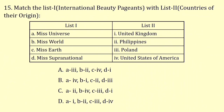Match list 1 with list 2. Miss Universe originated from the United States of America. Miss World is from the United Kingdom. Miss Earth originated in the Philippines. Miss Supranational originated in Poland. So the correct answer is option B.